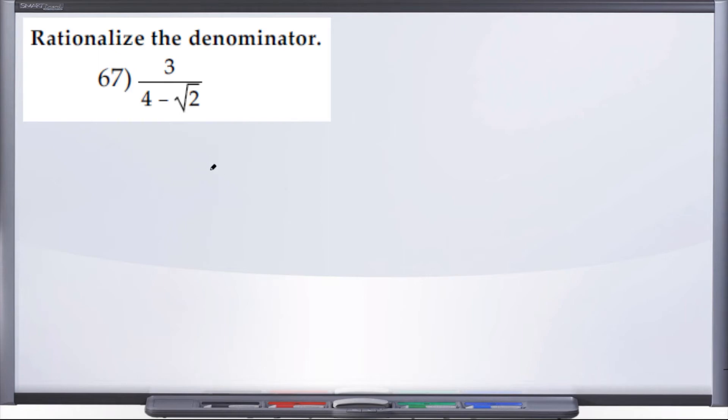All right, second to last problem here, number 67. We're still rationalizing the denominator, and we've been given 3 over 4 minus radical 2. You'll notice the difference here between 66 and 67: in 67 we have two terms in our denominator, where 66 we only had a single term, just a radical 11.